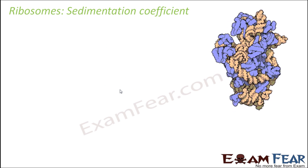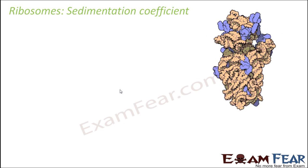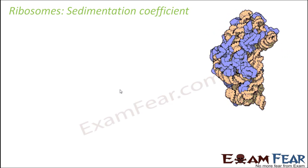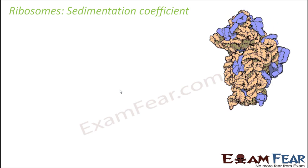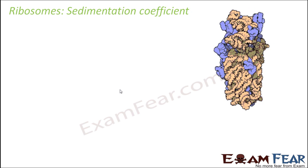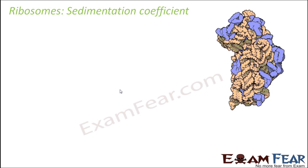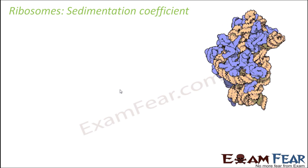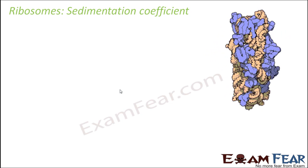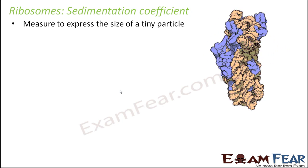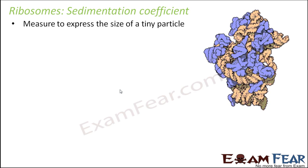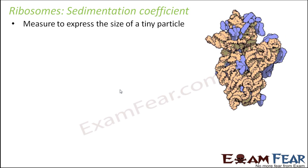The size of ribosomes is slightly bigger in eukaryotic cells than in prokaryotic cells. Since the cell itself cannot be viewed by the naked eye, and ribosomes are one of the tiniest particles inside the cell, how do we measure them? For that we use the sedimentation coefficient - a unit used to measure or express the size of a very tiny particle. This involves the process of centrifugation.